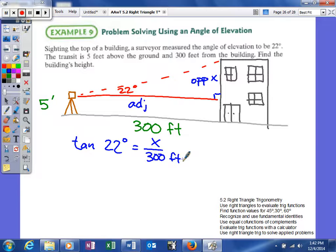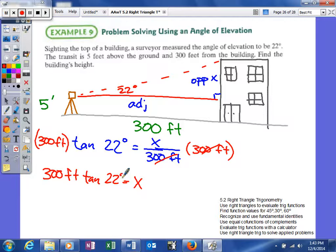So we have x, so the opposite side over the adjacent, x over 300 feet, is equal to the tangent of 22 degrees. So what we're going to do is we're going to multiply both sides by that 300 feet. And this will cancel, and it's going to give me x is equal to 300 feet times the tangent of 22 degrees.